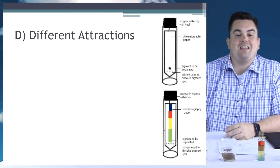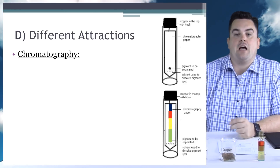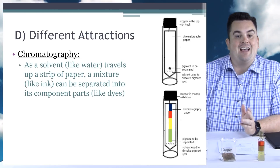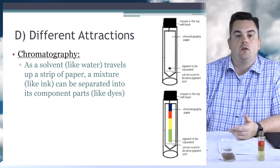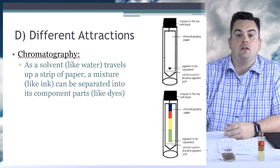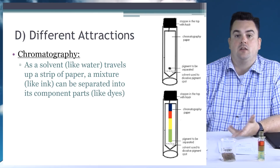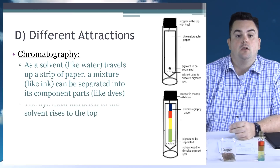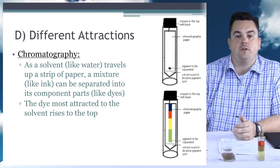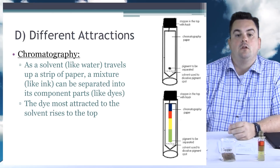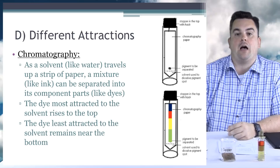Separating mixtures based on different attractions — chromatography. As a solvent like water travels up a strip of paper, a mixture like ink can be separated into its component parts like the dyes. The dye most attracted to the solvent rises to the top; the dye least attracted to the solvent remains near the bottom.